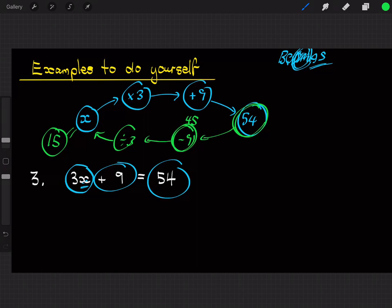So 45, then 45 divided by 3 is 15, so the answer is x equals 15. And we can check that by plugging it in: 3 times 15 is 45, plus 9 equals 54. That's true, so x does equal 15.